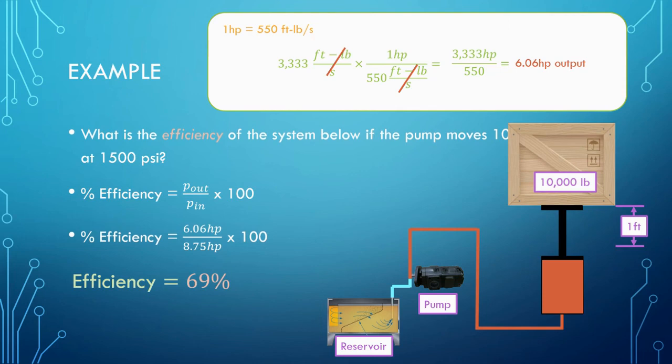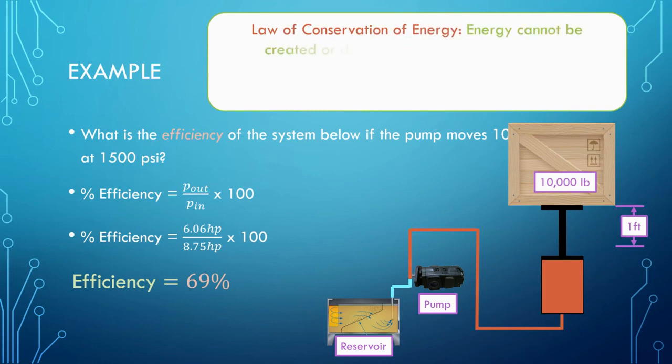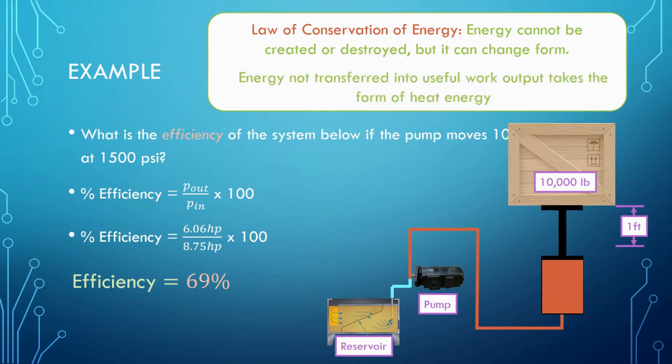69% of the power supplied by the pump was actually converted into useful power at the output. So what happened to the rest? The law of conservation of energy states that energy cannot be created or destroyed, but it can change form. In hydraulics, energy not transferred into useful work output takes the form of heat energy.